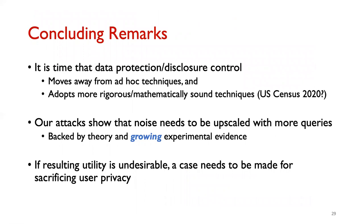To conclude, we believe it is time that data protection and disclosure control should move away from ad hoc techniques and use more rigorous, mathematically sound techniques like differential privacy, as adopted by the US Census 2020. Our attacks show that if such techniques are used, the noise needs to be upscaled with more queries, which is backed by differential privacy theory and a growing body of experimental evidence. Given these rigorous methods, if utility is still undesirable, then a case should be made explicitly for sacrificing user privacy.